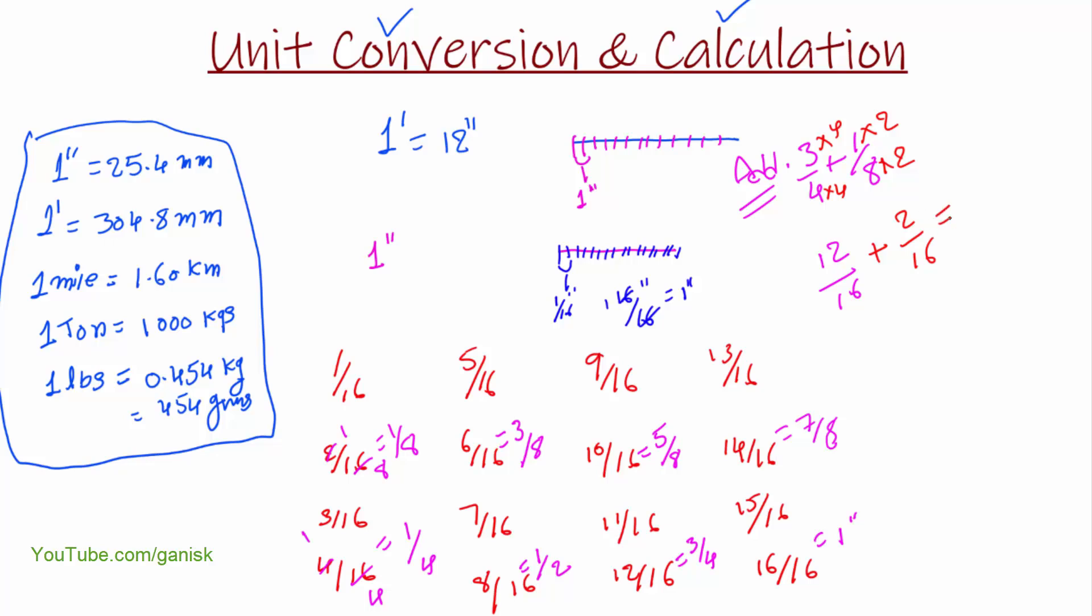So here you can see bottom values are same, 16. So we can directly add the top value. So 12 plus 2 becomes 14 by 16. Now these values are divisible. So for example, 2 times 7 and 2 times 8, so final answer is 7 by 8. You can calculate like this for addition.